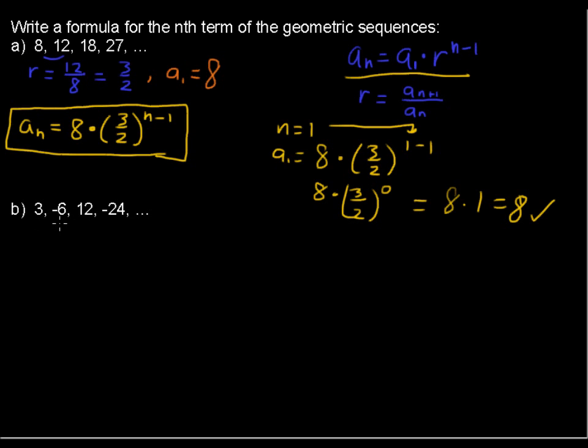Let's apply it to the second example, where we go 3, negative 6, 12, negative 24, and so on. Seems like we're going back and forth between negatives, so it gives you a clue that our ratio will probably be negative. Let's see.